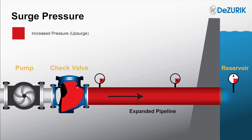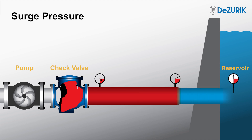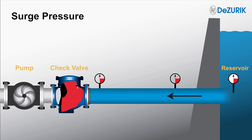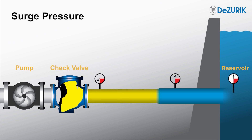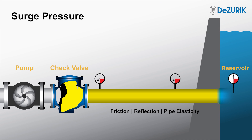After being reflected by the reservoir, pressure again normalizes and travels back toward the check valve. The cycle continues and the surge magnitude decreases at an exponential decay rate. This reduction occurs due to friction, reflection, and pipe elasticity during each surge period.